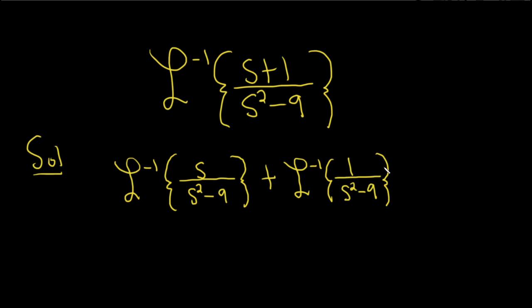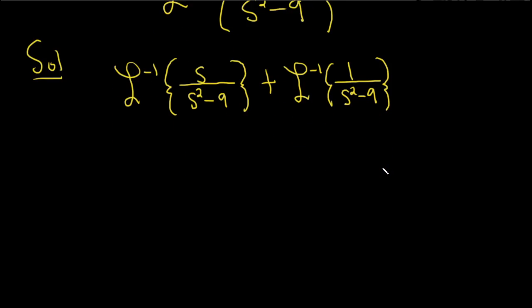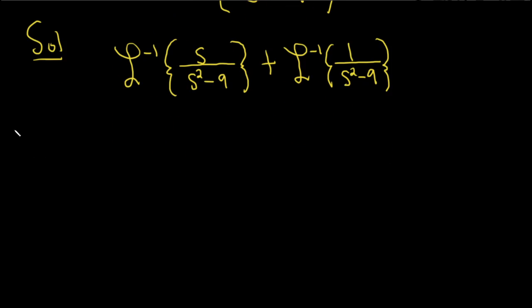Now we're going to use some formulas. These formulas are very powerful. The first one we're going to use tells us that if we have the inverse Laplace transform of s over s squared minus k squared, that's going to be equal to the hyperbolic cosine of kt.